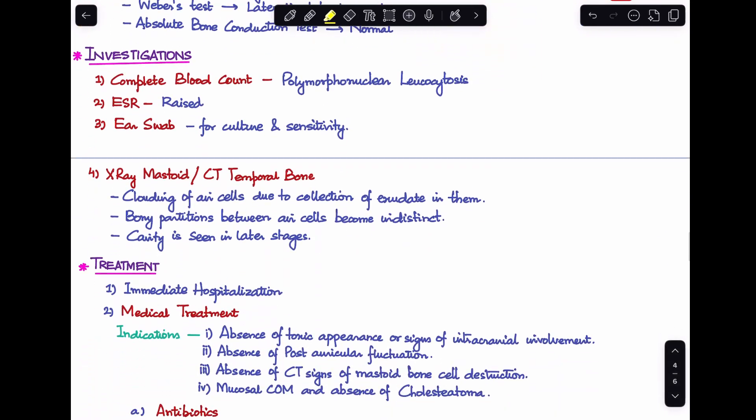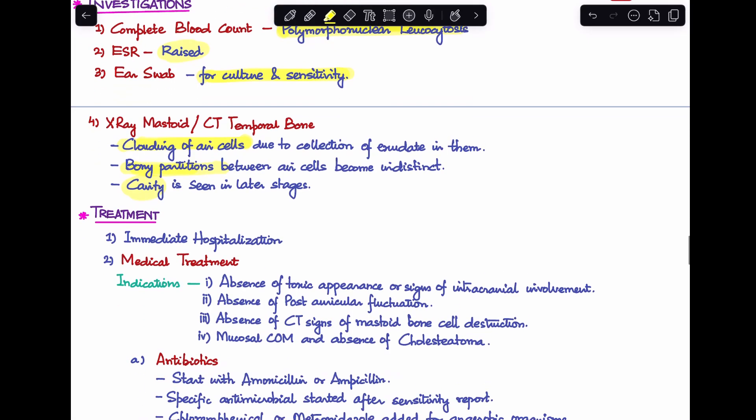Next, how will we investigate? First, performing a complete blood count will show polymorphonuclear leukocytosis. ESR will be raised because this is an inflammatory process. Performing an ear swab if there's purulent discharge will help in culture and sensitivity. Last, we can do an X-ray of mastoid or CT scan of temporal bone. Here we'll note clouding of air cells, bony partitions become indistinct, and you can see a mastoid cavity in later stages.